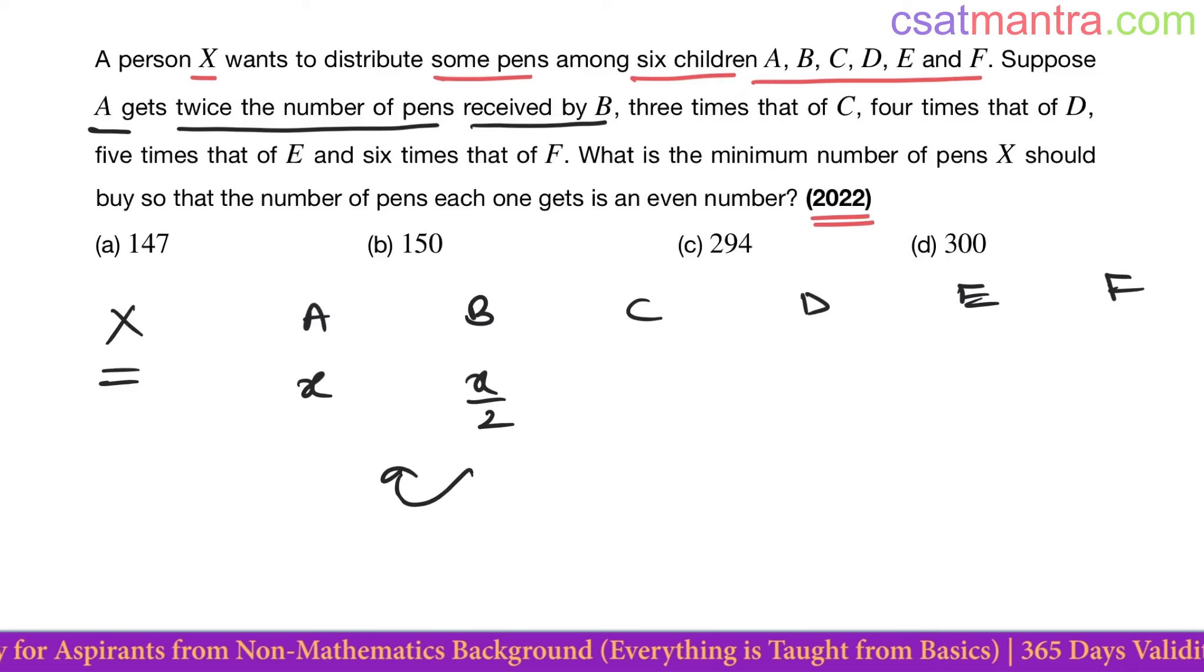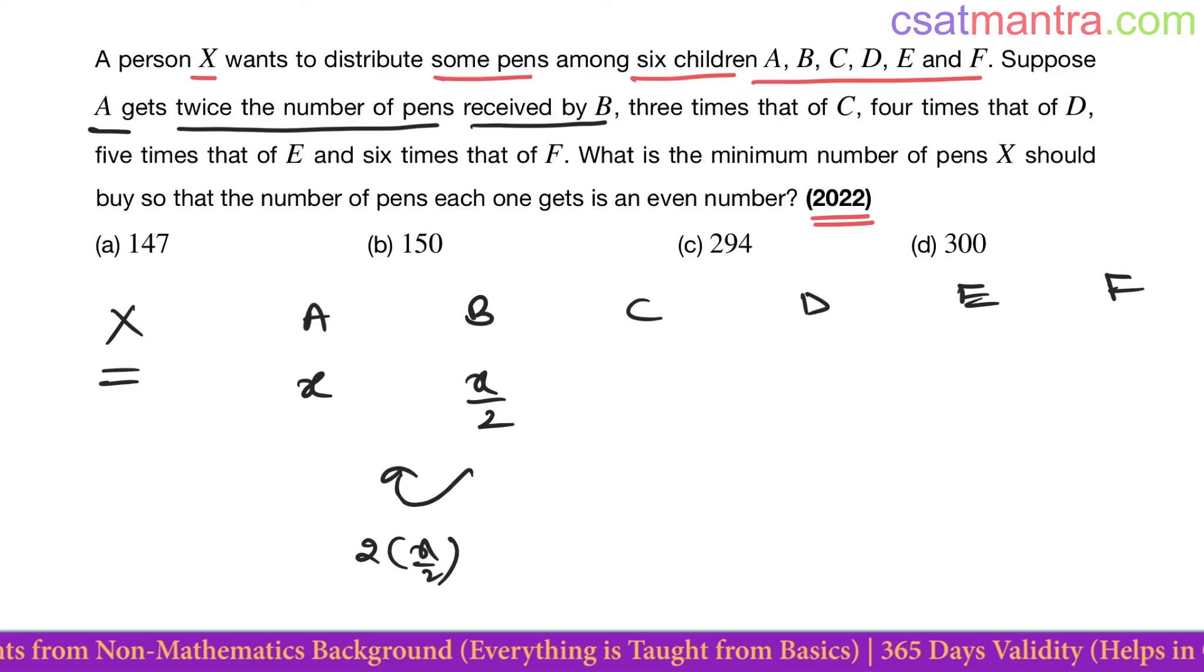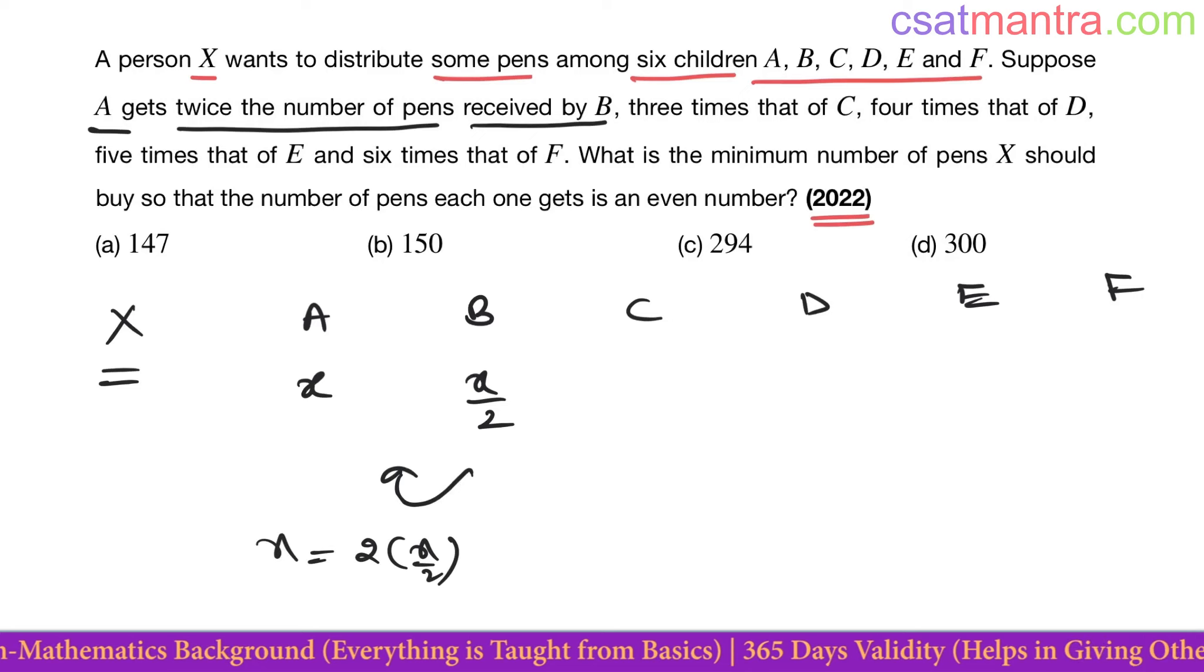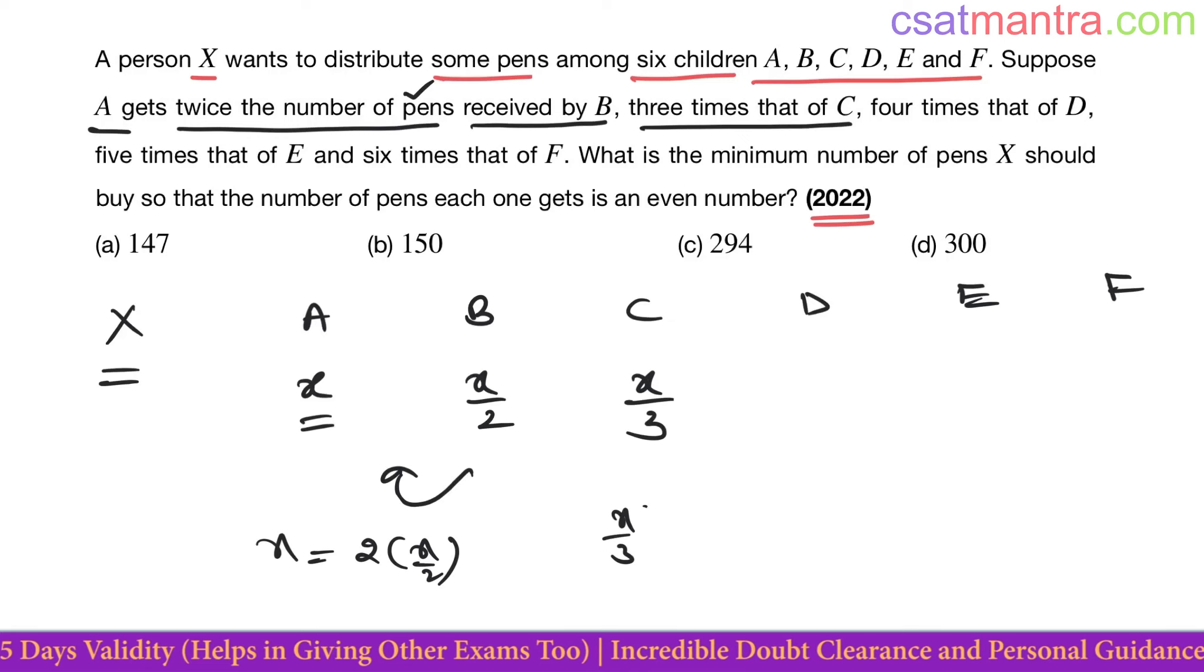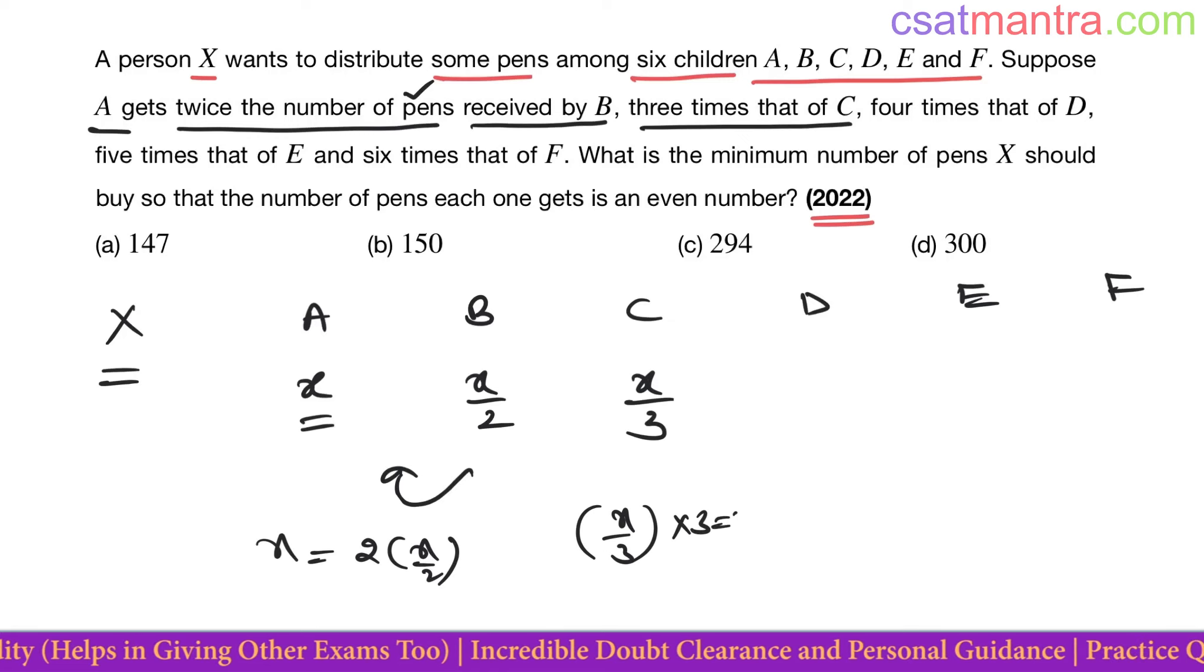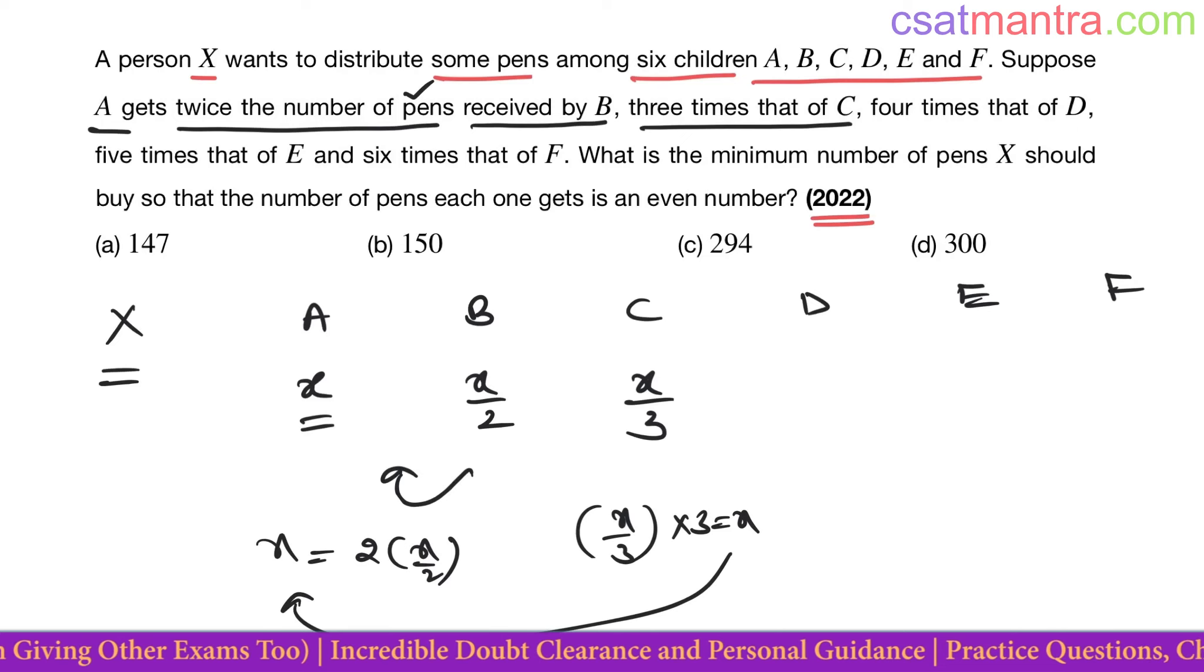See, twice the number of pens received by B, that is X. So if A gets X, B gets X by 2. A gets twice the number of pens received by B, three times that of C. That means C gets X by 3. See, X by 3 into 3, that is equal to X. Three times that of C.